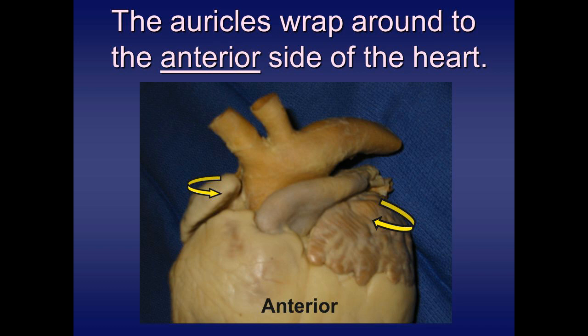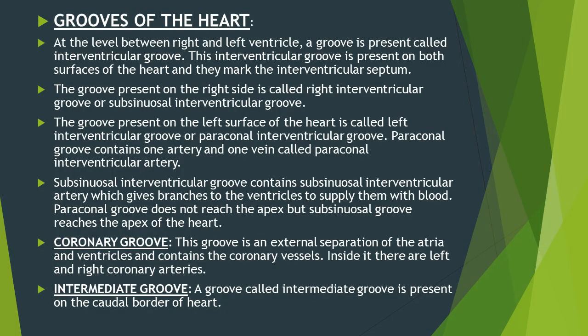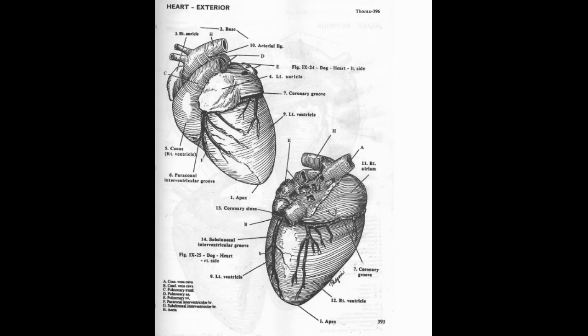The auricles, or auriculae cordis, are extensions from the atria. The left auricular cordis is the extension of the left atrium, and the right auricular cordis is the extension of the right atrium. At the level between the right and left ventricles, a groove called the interventricular groove is present on both sides of the heart.